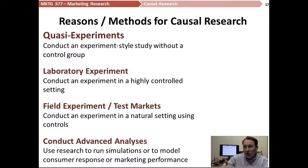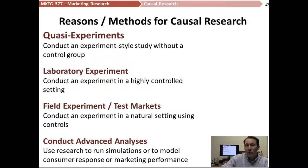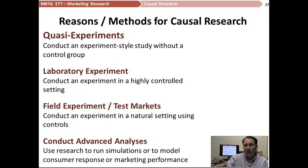A laboratory experiment generally is going to be conducted with a control group and with one or more experimental groups — not always, but usually. The control group goes through a normal simulation, and then we modify something for the experimental group and see what happens — how that change we put into place affects their behavior.